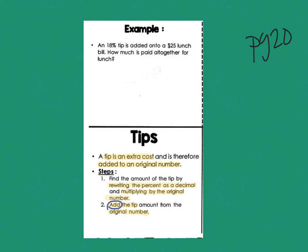Now up at the top, I'm going to take a look at the information they give me. It says an 18% tip is added onto a $25 lunch bill. How much is paid all together for the lunch? So this 'all together' word corresponds with my last step of adding.